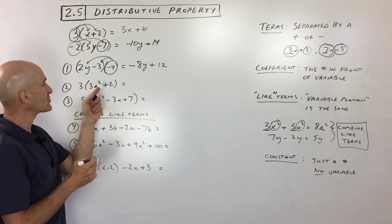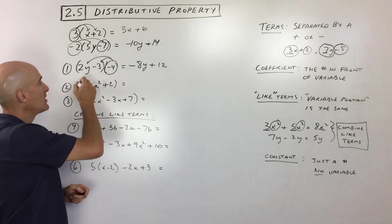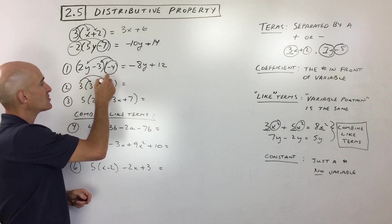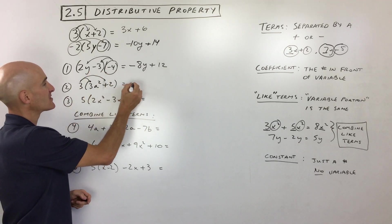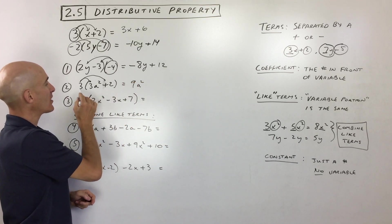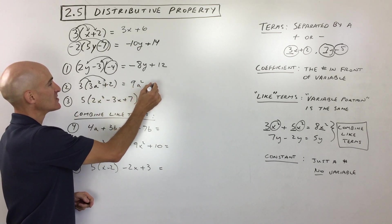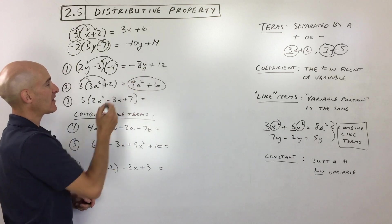Let's do this one over here. 3 times 3a squared plus 2. Distribute, distribute. 3 times 3 gives us 9a squared. See, I'm multiplying. And then 3 times positive 2 is 6. There you go. That's your final answer.